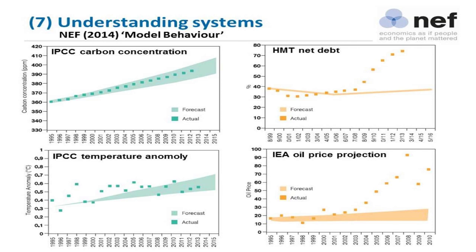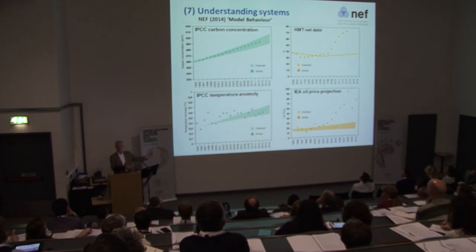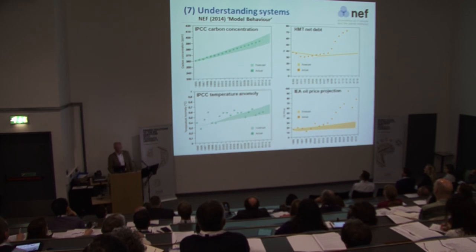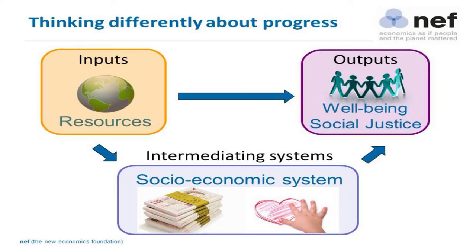Finally, in terms of systems, we have a piece of work called 'Model Behaviour,' just published. Given the criticism of the IPCC and the claim that we cannot afford to take policy action because of uncertainty around climate models, we compared how accurate IPCC forecasts have been versus the forecasts we do take policy action on — from the Department of Transport and the Treasury. Those are hopelessly inaccurate, and yet we take action on them and not on the climate ones. Ladies and gentlemen, that is ridiculous. That's how we frame progress — thanks very much for listening.